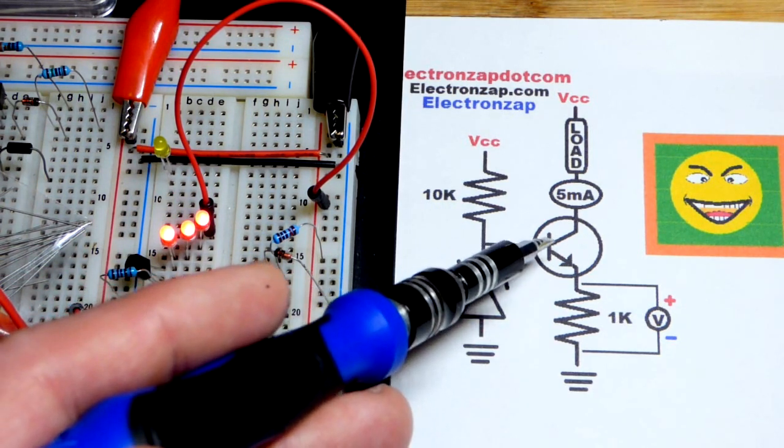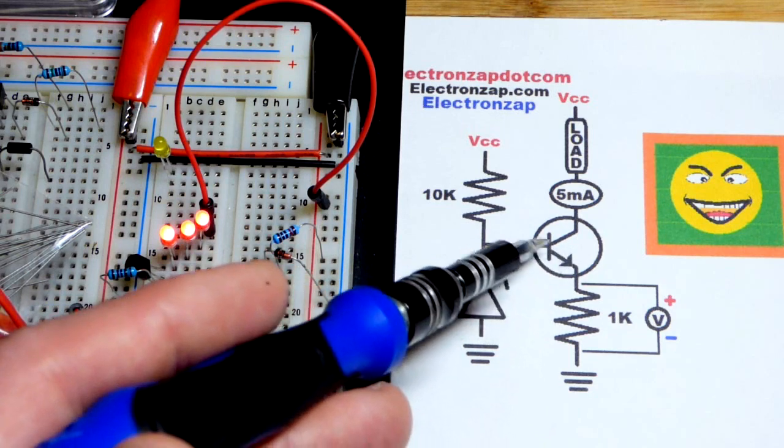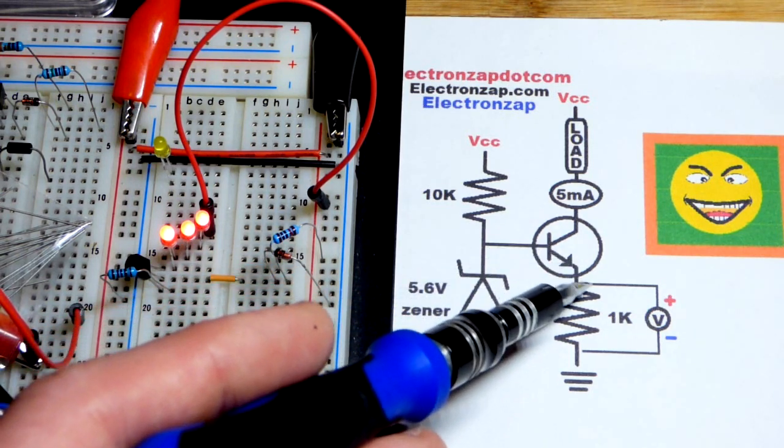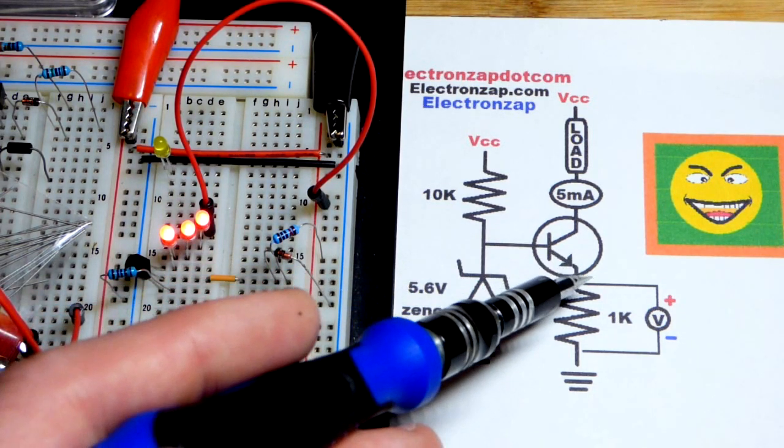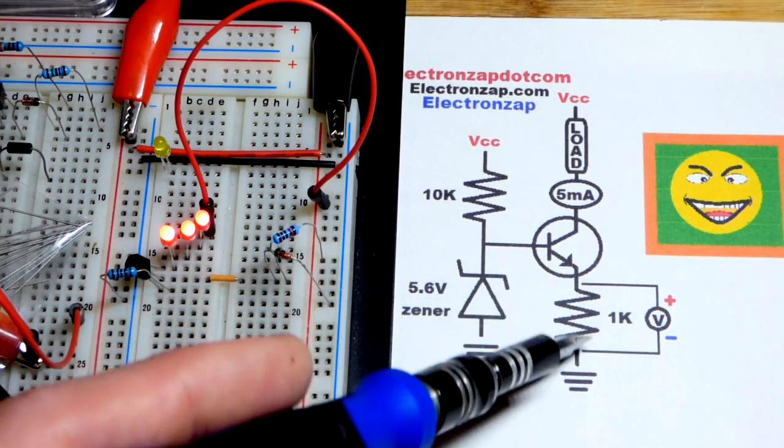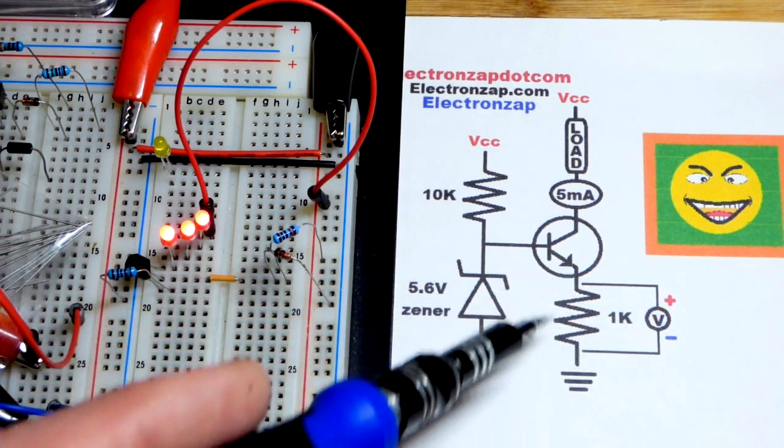That'll build up about 5.6 volts, and then the base-to-emitter's going to drop about 0.6 volts, and this is approximate. So we're going to have pretty close to exactly 5 volts across the resistor.